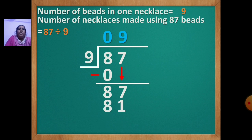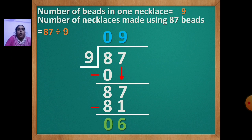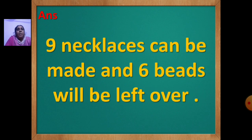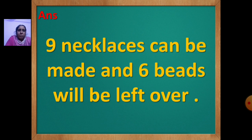Draw the line, put the sign of minus. 7 minus 1 is 6, 8 minus 8 is 0. So here you have got quotient and remainder: 9 is the quotient and 6 is the remainder. The answer statement: 9 necklaces can be made out of 87 beads and 6 beads will be left over.